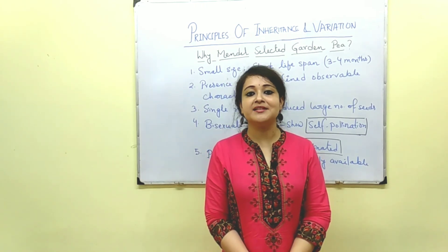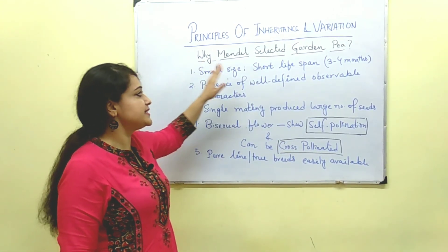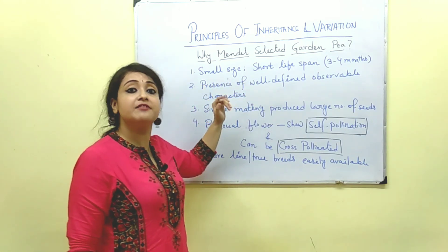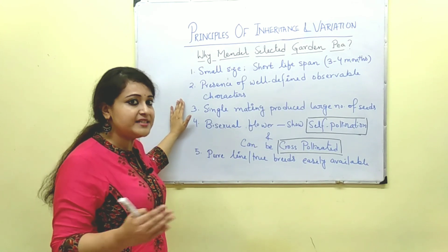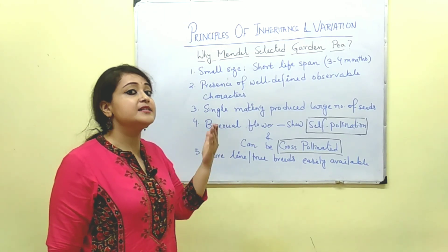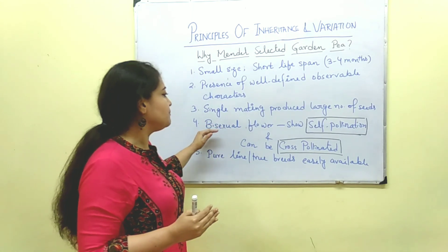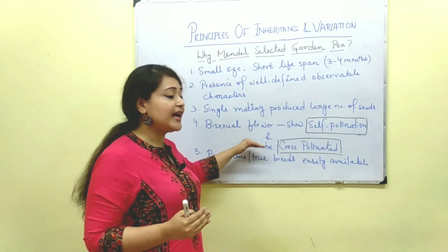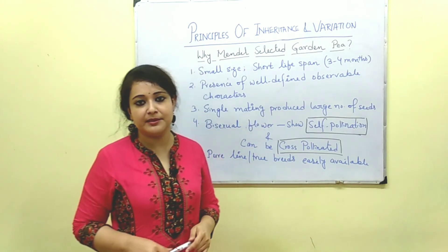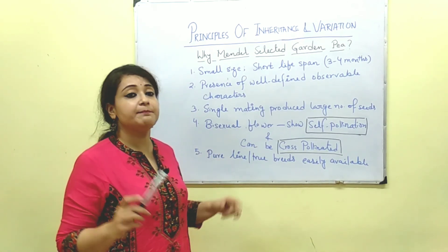The next thing important for the exam is why Mendel selected garden pea. First, garden pea had small size and short lifespan — 3 to 4 months — so it's easy to handle. Second, presence of well-defined observable characteristics. Third, a single mating gave rise to a large number of seeds. Fourth, garden pea contains bisexual flowers, meaning both male and female parts are in the same flower, so it shows self-pollination and can also be cross-pollinated. Finally, pure lines or true breeds are easily available.